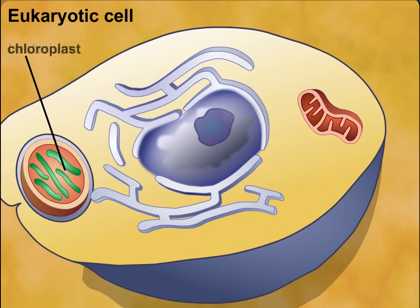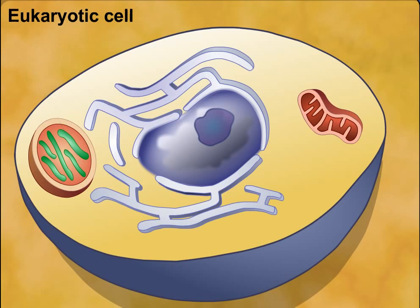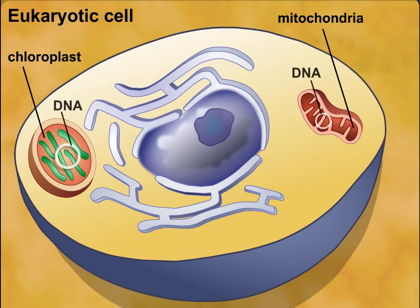Several facts provide evidence for the endosymbiotic hypothesis. A few examples include: 1. Mitochondria and chloroplasts contain their own circular DNA, similar to DNA in bacteria.